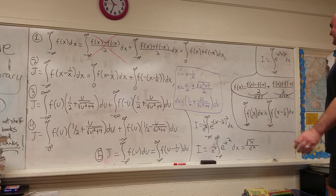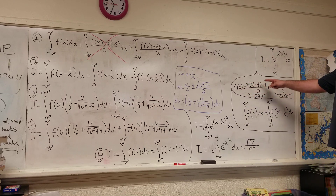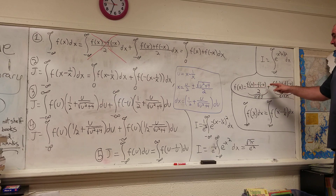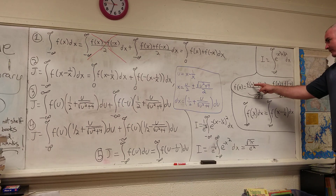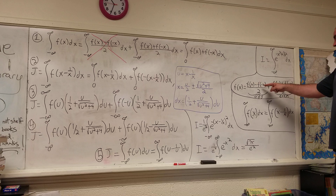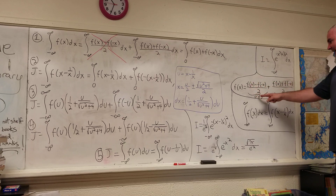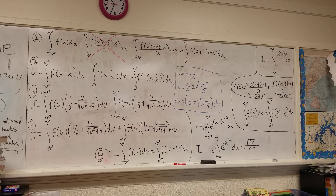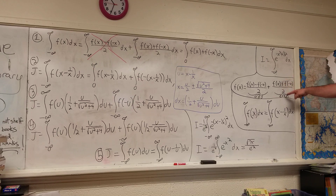If you have a function f of x, it will be equal to f of x minus f of negative x over 2, which is the odd part — because if you plug in negative x for x, you get f of negative x minus f of x, which is exactly the negative of that. So that's an odd function. Then you also have the even part, which is f of x plus f of negative x over 2, and that's even because if you plug in negative x, you just get the same thing back.